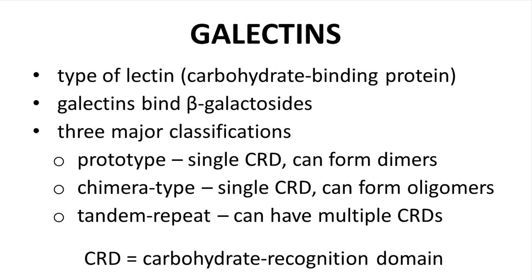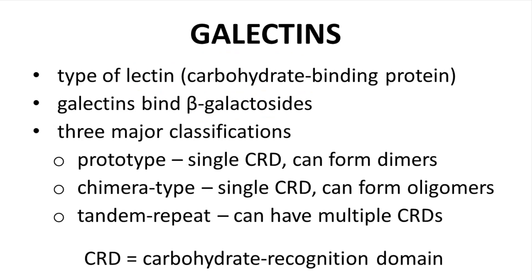The drug program we are discussing targets Galactin, which is a specific type of lectin. Lectins are proteins that bind carbohydrates, and Galactins specifically bind to beta-galactosides. There are three classifications of Galactins. The prototype Galactins have a single carbohydrate recognition domain, or CRD, and form oligomers. Finally, the tandem repeat type has multiple CRDs on each protein.